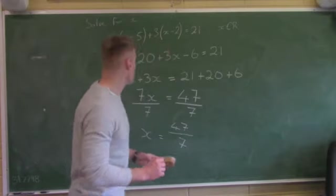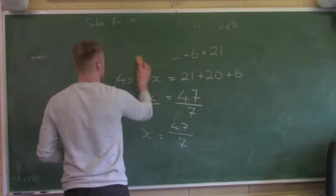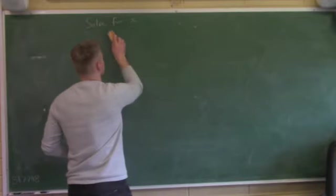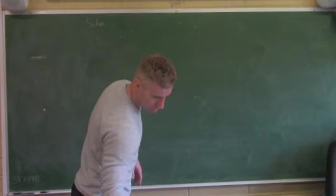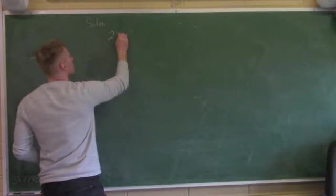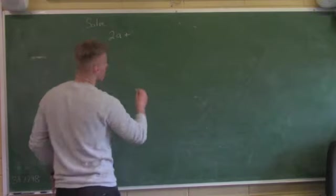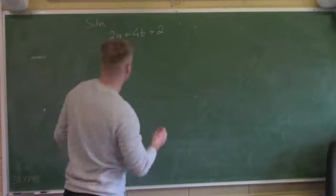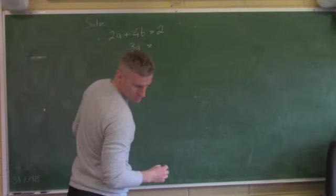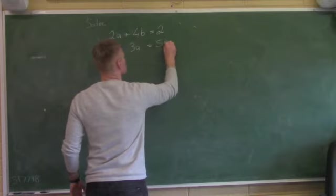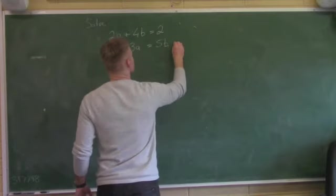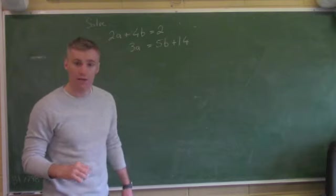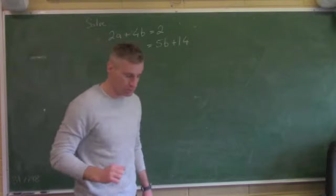Since 7 doesn't go evenly into 47, I can leave my answer as 47 over 7. They said x was a real number, and this is a real number in fraction form, so I'm happy to leave it like that to get full marks. The next topic we'll look at is a simultaneous equation.